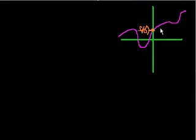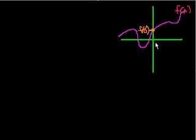Let's say I have this bizarre looking function — just some arbitrary function — and we'll call that f of x. What we're going to do in this video is play around a little bit and try to approximate this function using a polynomial with some coefficients. We're going to keep adding terms to the polynomial so that we can better and better approximate this function. That's actually called a power series.